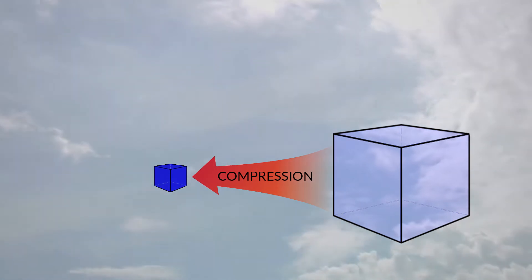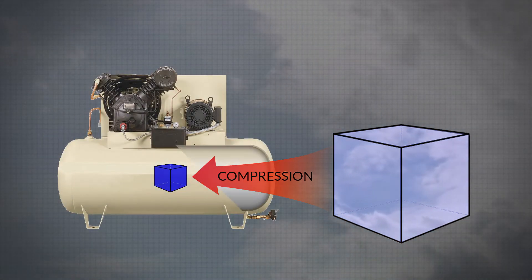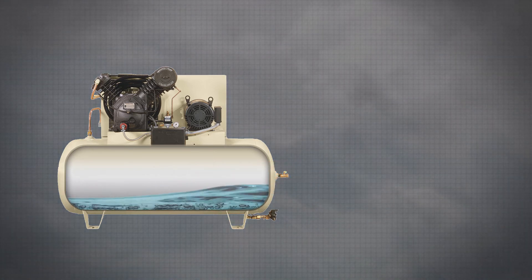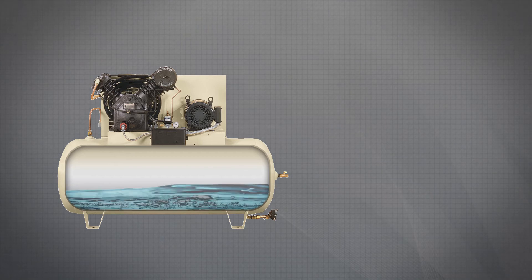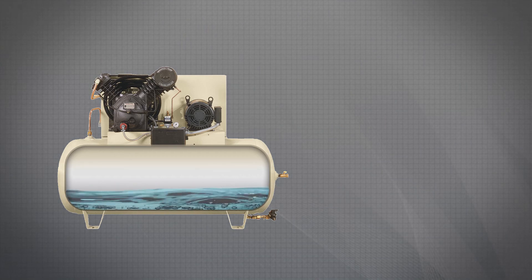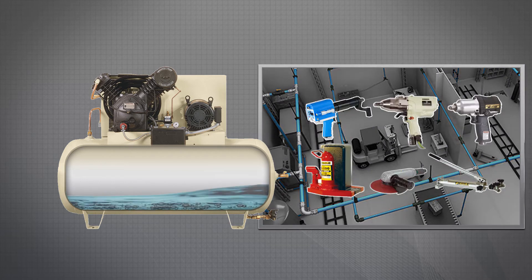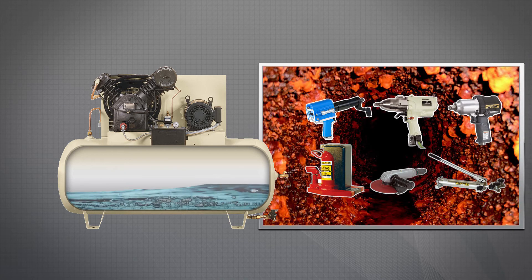Air naturally contains humidity, and when air is compressed, it transfers that moisture into the expansion tank. As the compressed air is cooled, condensation collects in the bottom of the tank and must be removed. Draining this condensate is a necessity for the compressor to operate effectively, because it prevents moisture from getting into the lines and air tools, and also prevents the development of corrosion, which increases the safety of operation.